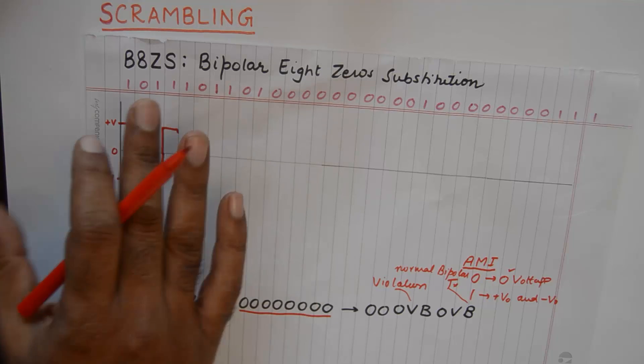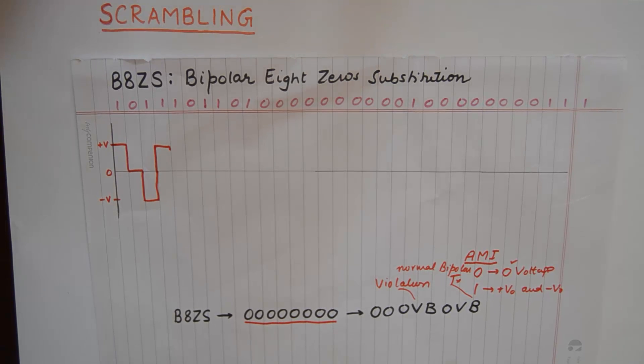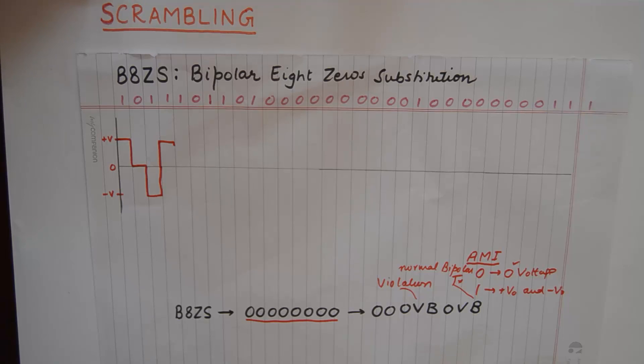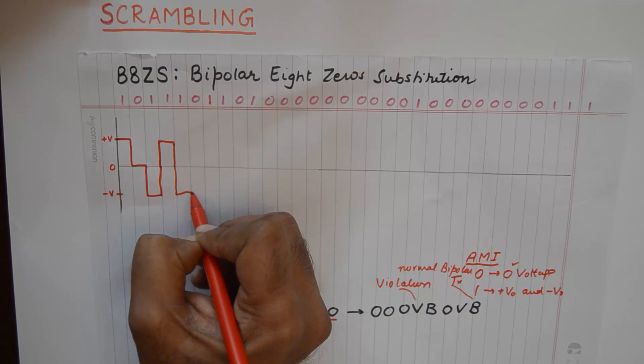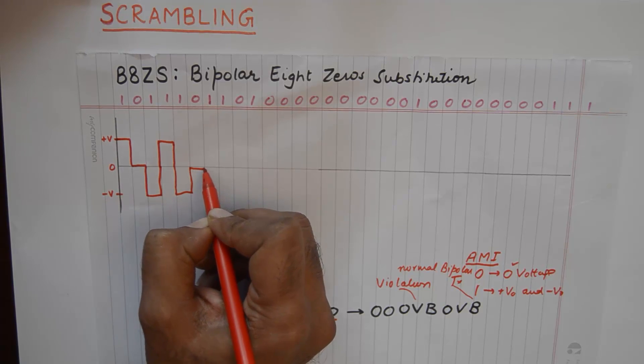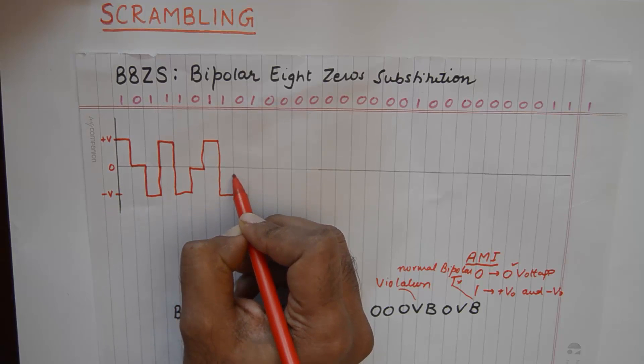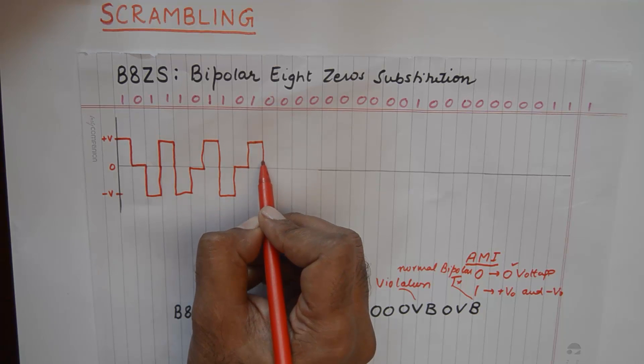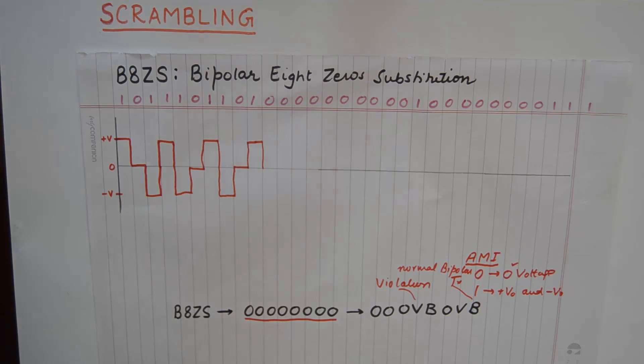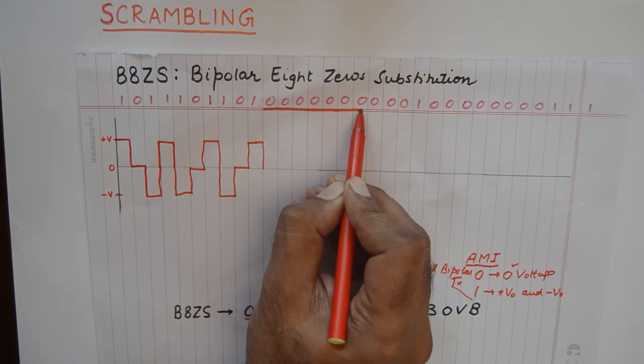But for the time being until we see eight zeros happening in succession, we need to follow the normal routine of AMI. Ones are going to toggle like this and zero will happen as is. One goes into plus, next one goes into minus, then a zero into zero, one goes into a plus. Now please understand we see eight zeros here. What we do is we mark these eight zeros: one, two, three, four, five, six, seven, eight.